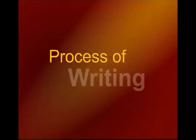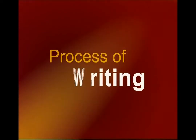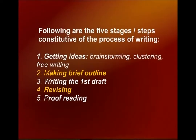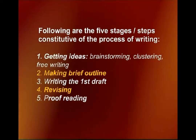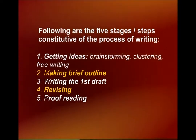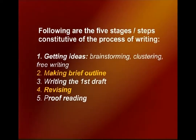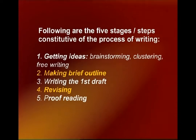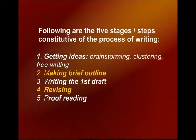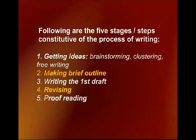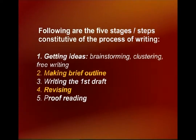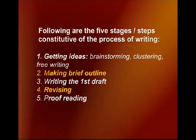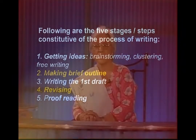Writing usually takes place in steps, or stages, and there are five stages in the writing process. The first one is getting ideas. There are three ways to get ideas: brainstorming, clustering, and free writing. The second step is making a brief outline. The third step is writing the first draft. The fourth is revising what you have written. And the last step is proofreading.